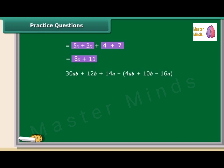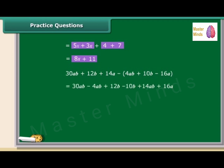Now we need to subtract 4AB + 10B − 16A from 30AB + 12B + 14A. We use the same criteria as for addition — bring the like terms together, taking into consideration the sign of the terms. On rearranging, we get 26AB + 2B + 30A.